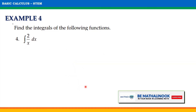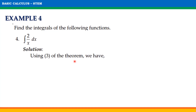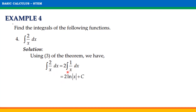For the last example, solve for the indefinite integral of 2 over x with respect to x. We can use the third theorem, so we will have the indefinite integral of 2 over x with respect to x equal to 2 times the indefinite integral of 1 over x with respect to x. Since the indefinite integral of 1 over x is ln of absolute value of x plus c, the final answer is 2 times ln of absolute value of x plus c.